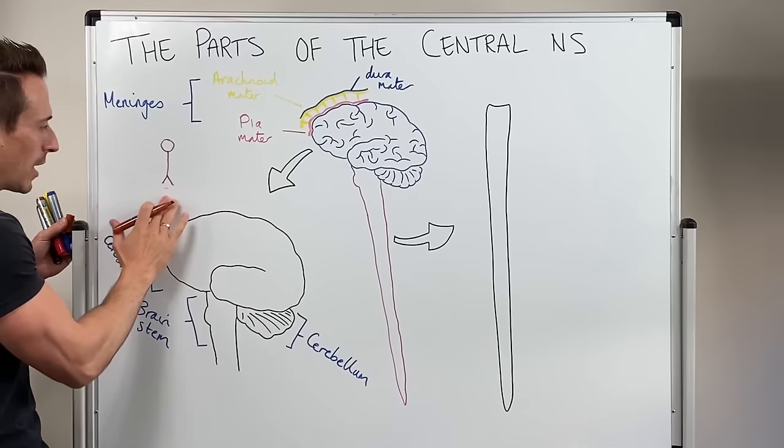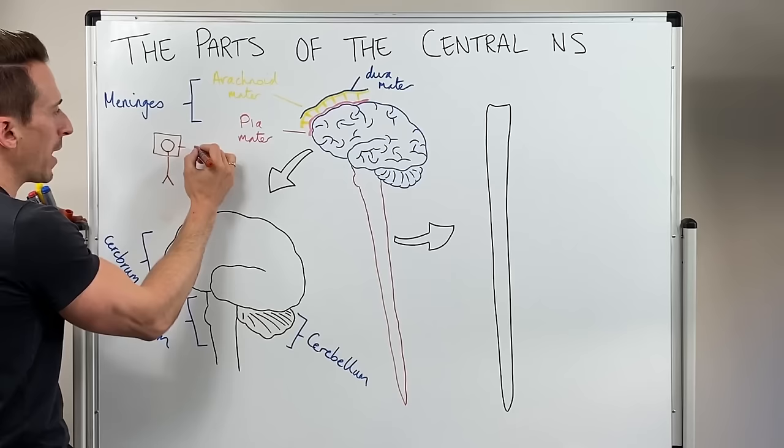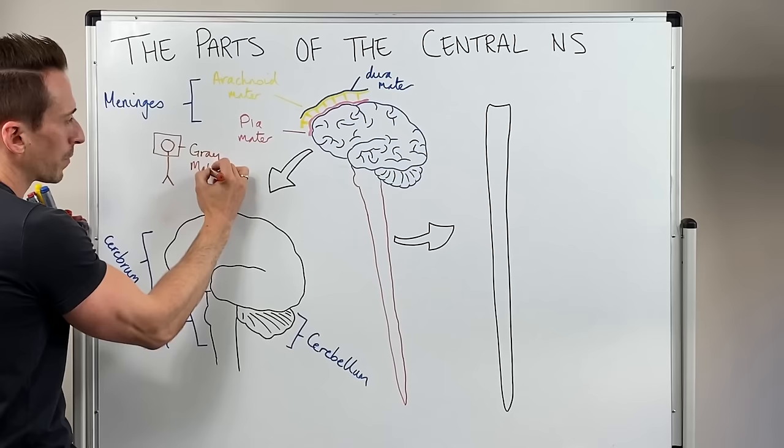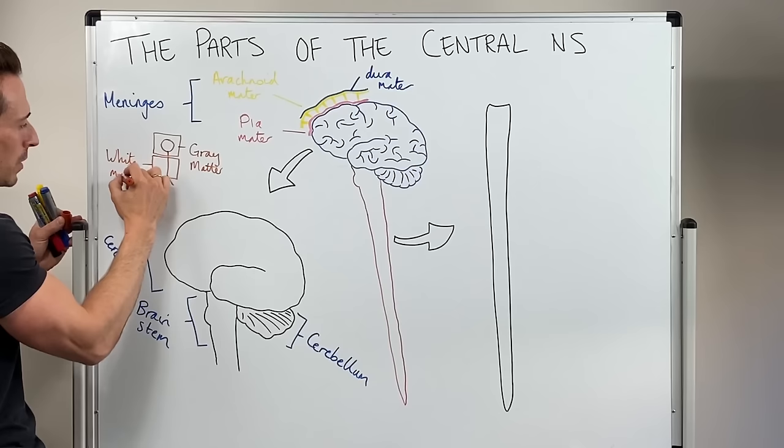Now, what you find is that these cell bodies, when you have a collection of these neuron cell bodies, they make up the grey matter. And the axons actually make up the white matter.